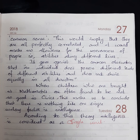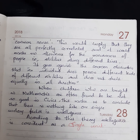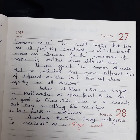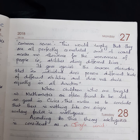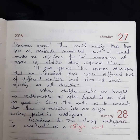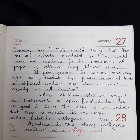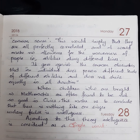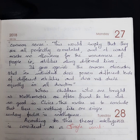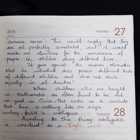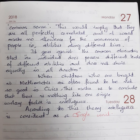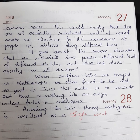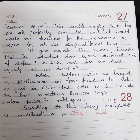Sometimes we can see that children who are bright in mathematics are often found to be not so good in civics. This leads us to conclude that there is no single unitary factor called intelligence — we cannot say intelligence means one single unit. In later years, other psychologists proved that the concept of intelligence is composed of several factors, and this became the major drawback for the unifactor theory.